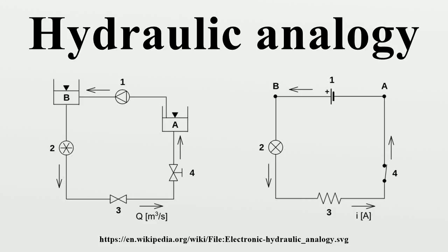The electronic-hydraulic analogy is the most widely used analogy for electron fluid in a metal conductor. Since electric current is invisible and the processes at play in electronics are often difficult to demonstrate, the various electronic components are represented by hydraulic equivalents. Electricity was originally understood to be a kind of fluid, and the names of certain electric quantities are derived from hydraulic equivalents. As with all analogies, it demands an intuitive and competent understanding of the baseline paradigms.